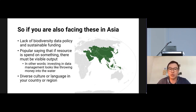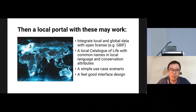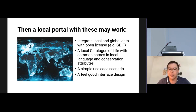In conclusion, if you are facing similar issues in Asia or around the world — a lack of biodiversity data policy, trouble with sustainable funding, a culture where spending resources must produce visible output (so investing in data management looks like throwing money into the water), or diverse cultures and languages in your region — we believe a local portal with the following features might help: integrate local and global data with open licenses like GBIF; use a local Catalog of Life with common names and conservation attributes to create simple use case scenarios; and provide a good interface design to encourage people to interact with these informatics systems.